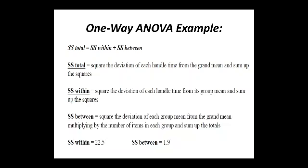Sum of squares total is the sum of SS within plus SS between. Mean square is the deviation of each handle time from the grand mean, summed and squared. SS within is the squared deviation of each handle time from its group mean, summed. SS between is the squared deviation of each group mean from the grand mean, multiplied by the number of items in each group, then summed. In the given example, SS within is 22.5 and SS between is 1.9.